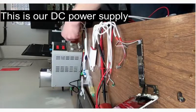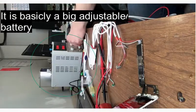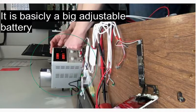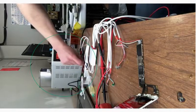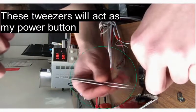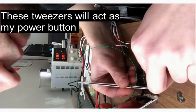Now for testing, we're going to use this DC power supply. This is basically like a big adjustable battery that we're going to use to power the iPhone 6S. And we're going to use these tweezers to act as a power button since the board is not placed in the frame yet.